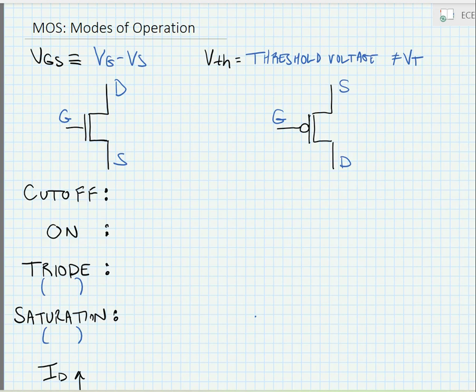So in the cutoff region of operation, we know that VGS is less than VTH. For a PMOS, if we just reverse the subscripts and take the absolute value of the threshold voltage, the equation looks identical.